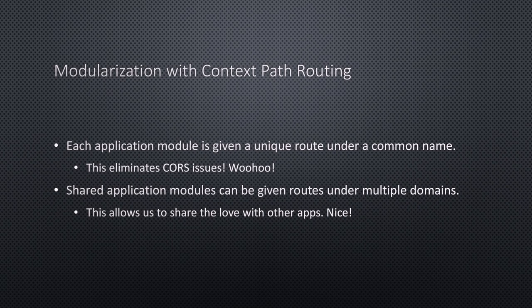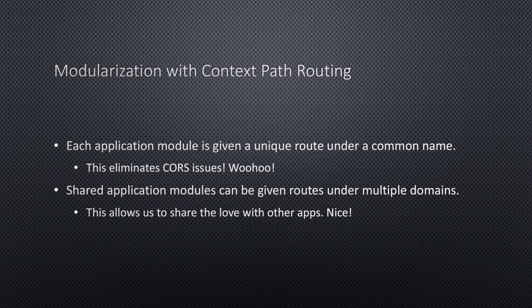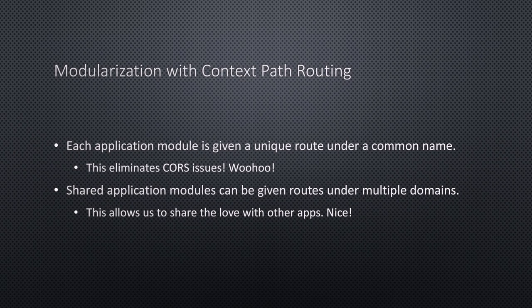With context path routing, each of the modules inside the cloud of applications is given a unique route. This eliminates CORS issues that we could potentially have on the front end — I've done a lot of front-end development and that's very nice. CORS is such a pain. We can also create routes to modules that don't even exist inside our cloud, like enterprise services or Google API endpoints, and combine those into our application to make it behave as though there's just one app.